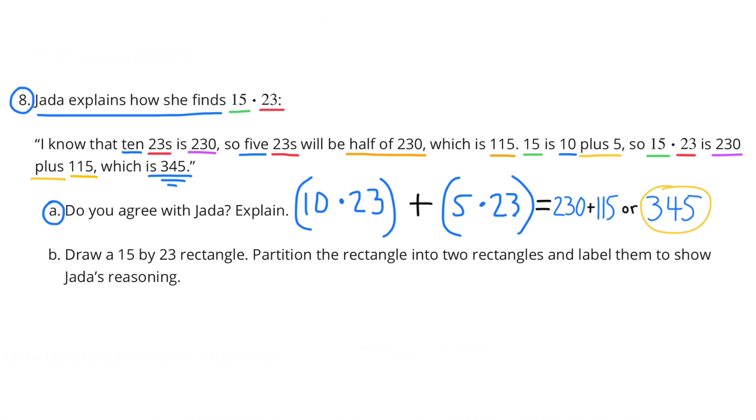15 is 10 plus 5, so 15 times 23 is 230 plus 115, which is 345.